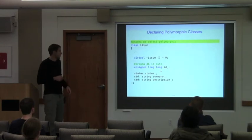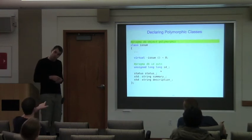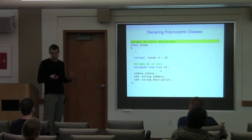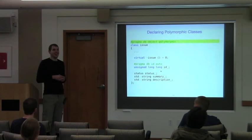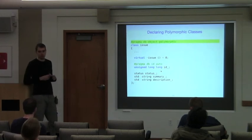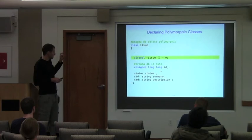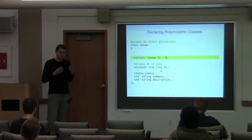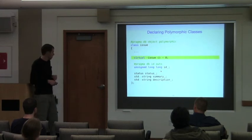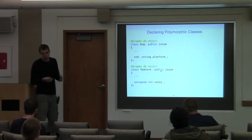Question: can you combine polymorphic and optimistic? Yes — they're orthogonal concepts. The class also has to be polymorphic in the C++ sense, meaning it has to have one or more virtual functions. Having a virtual destructor is generally a good idea. We don't need to do anything special for derived classes — ODB will automatically know they are polymorphic because they derive from a polymorphic base.